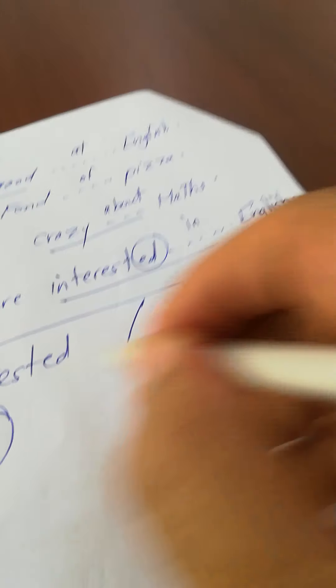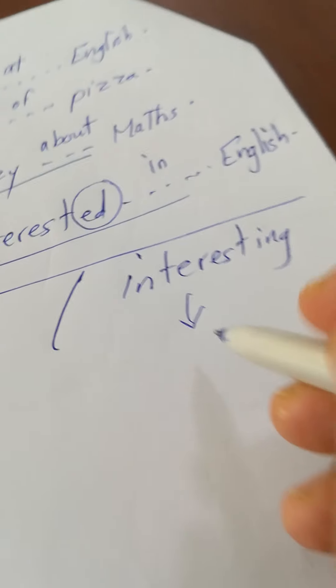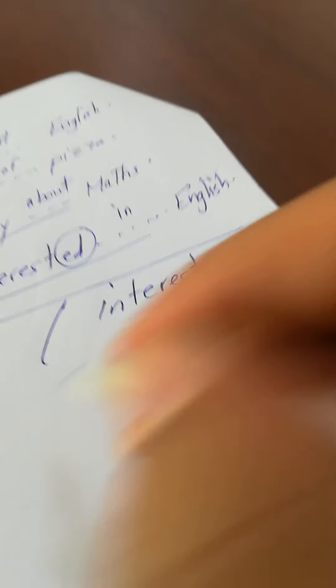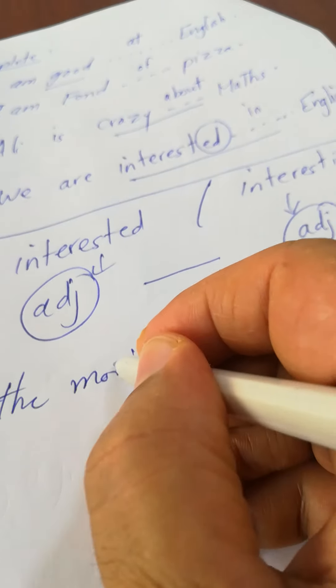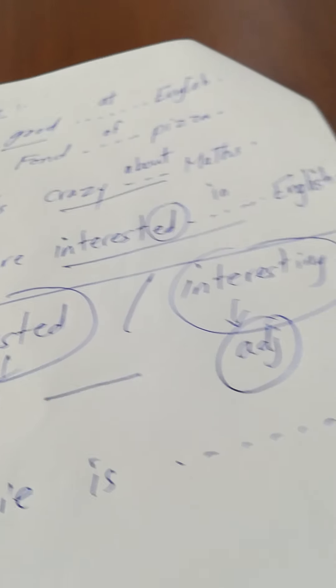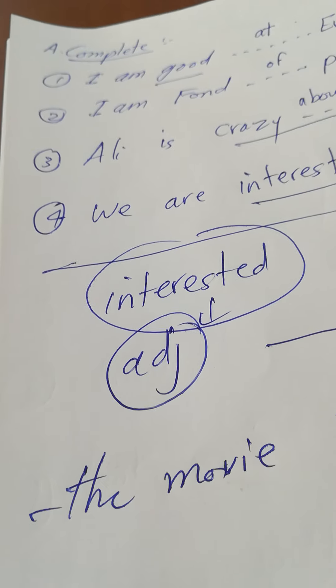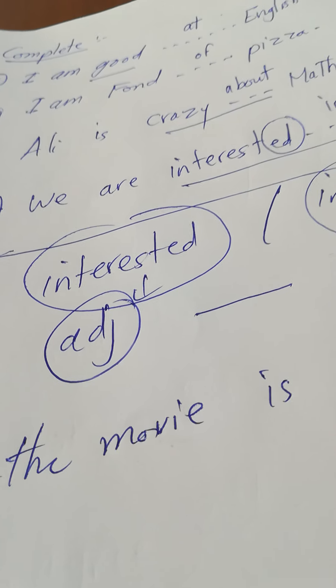For example, I say the movie is, what? Choose one of these adjectives, interested or interesting. What is the right one? The movie is interesting, I-N-G, is interesting I-N-G. But when I say...